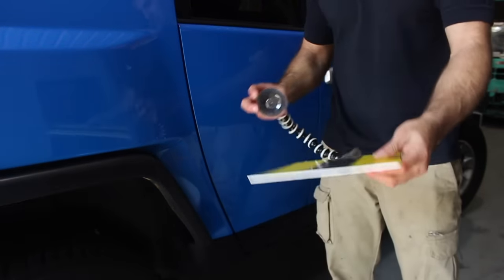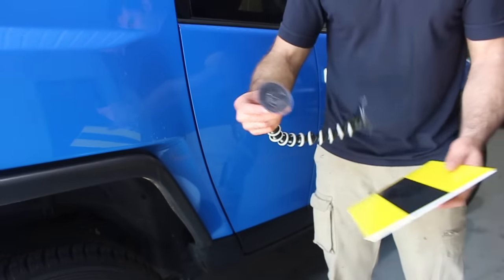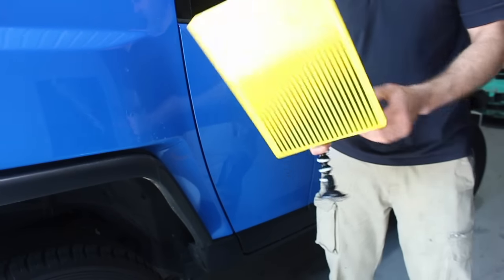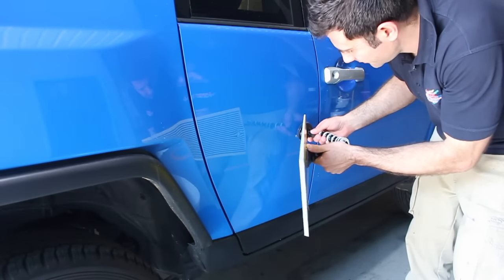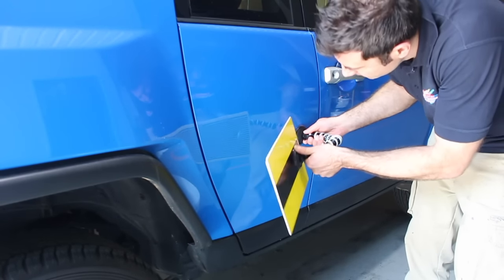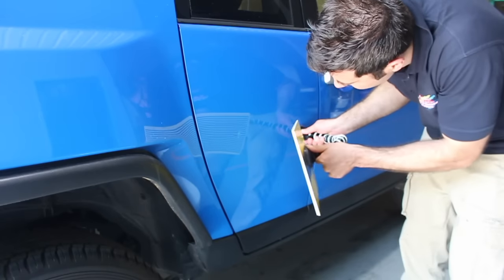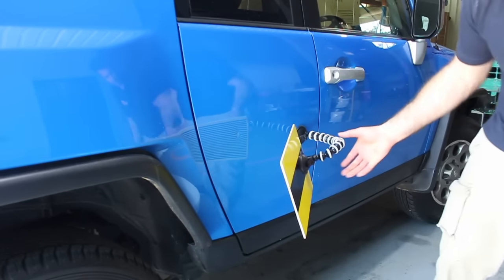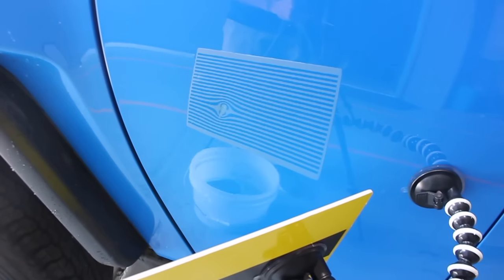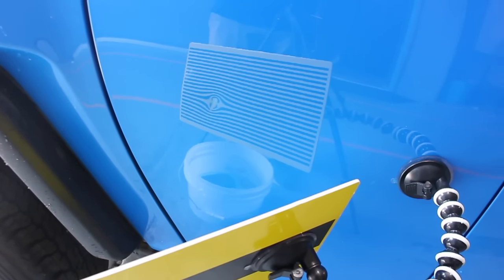In the kit, you get this board with some lines on it and a suction cup holder. This attaches to the panel, and you look at the reflection of the lines, and where the lines aren't straight, that will basically highlight the dent in the panel. It's a really good tool and it really makes the dent stick out. Now that I've put this board here, you can clearly see the dent in the door.